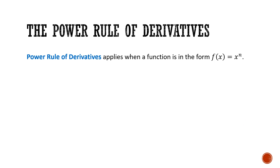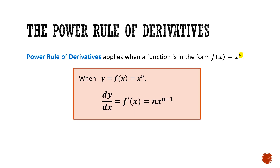The power rule of derivatives applies when a function is in the form of f(x) = x to the power of n — in other words, when our x value has an exponent, any exponent. The derivative, written as dy/dx or f prime of x, is going to be equal to n times x to the power of n minus 1, where n was our original exponent.